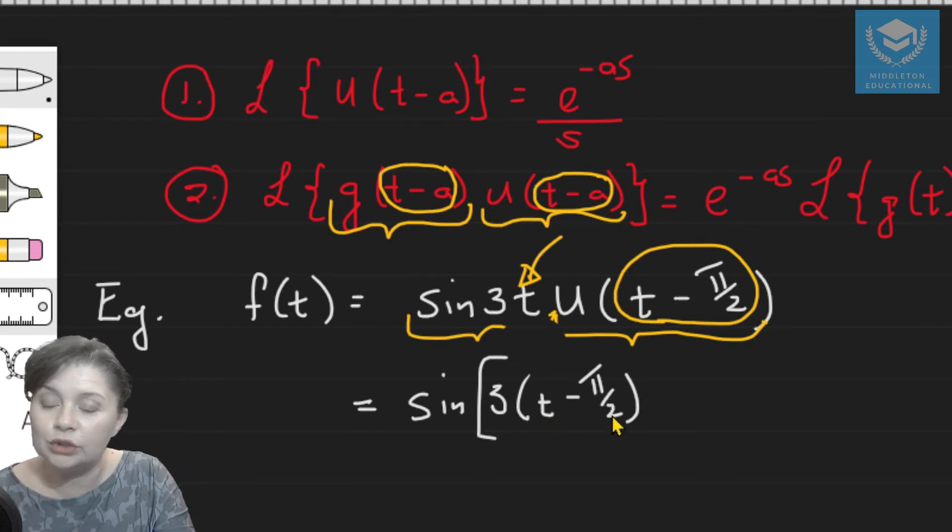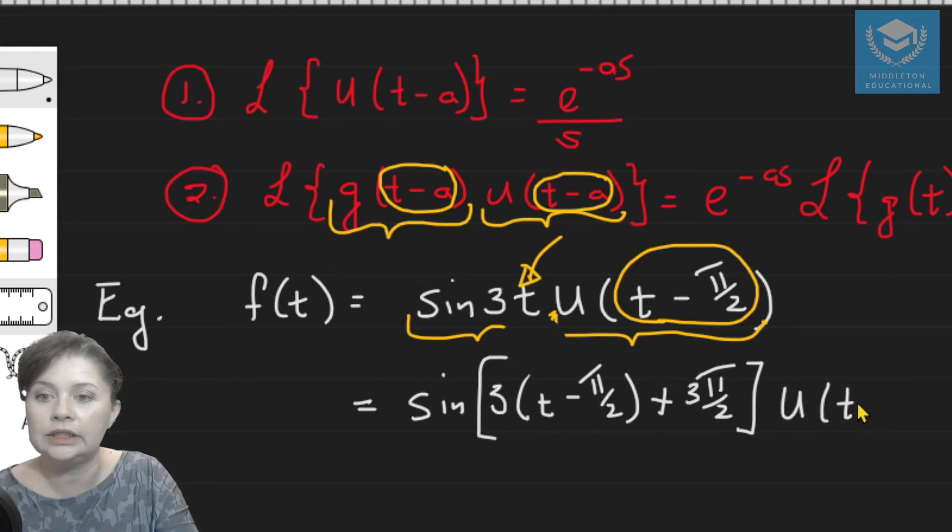And if you look at my function here now, I've got t minus pi over 2. What did I actually introduce? Did I introduce minus pi over 2? No, I didn't. I actually introduced 3 times pi over 2. So I'd have to compensate with 3 pi over 2, u of t minus pi over 2.